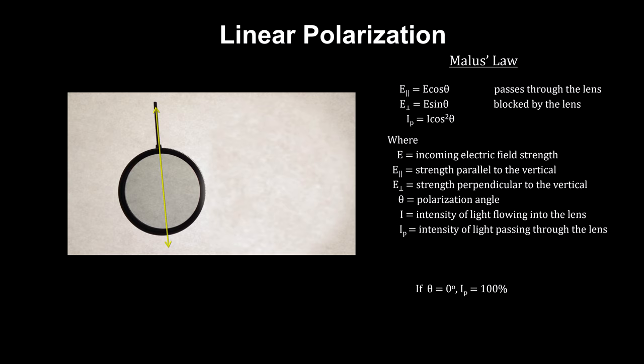Photons leaving the background table have a wide variety of polarizations. We start with a lens that only allows light polarization in the vertical direction to pass through. All the other light is blocked.